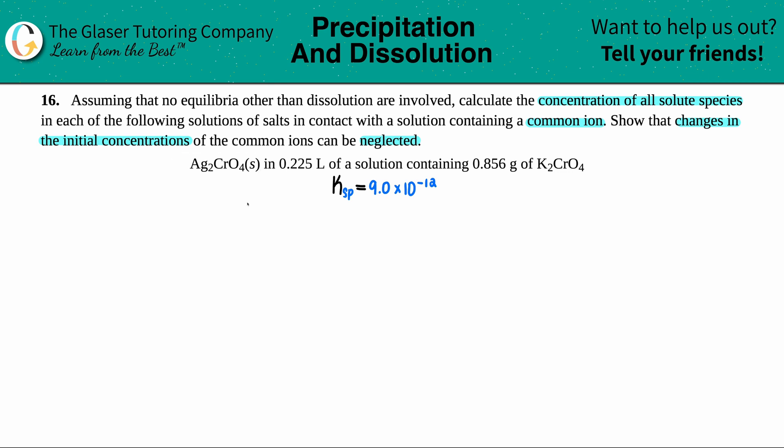For this problem we have Ag2CrO4 as a solid compound that's going to be dissolved. It's in 0.225 liters of a solution containing 0.856 grams of K2CrO4. We need to find the solubility product of Ag2CrO4, which I found in the back of a textbook: Ksp is 9.0 times 10 to the negative 12th.